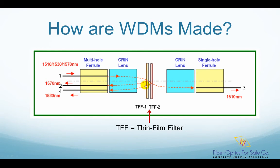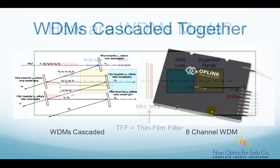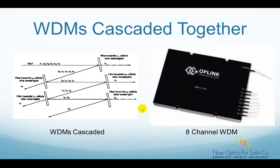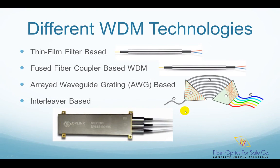Why isn't 1530 nanometer focused into fiber two? That is because the filters have a thickness, so there is an offset in the vertical direction. We just talked about a three-channel WDM device. Thin film filter based WDMs can be cascaded together to get higher channel counts, such as 4, 8, 16, or 32 channels. The right side picture shows an eight-channel WDM device, and the left picture shows how it is made by cascading several WDMs together.